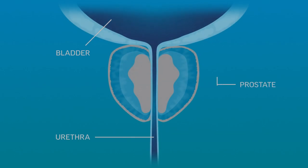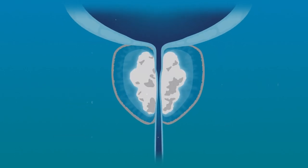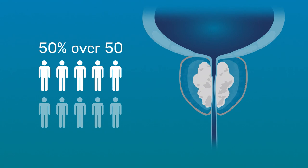BPH is a localized enlargement of the prostate gland that affects 50 percent of men over the age of 50 and up to 90 percent of men over 80.